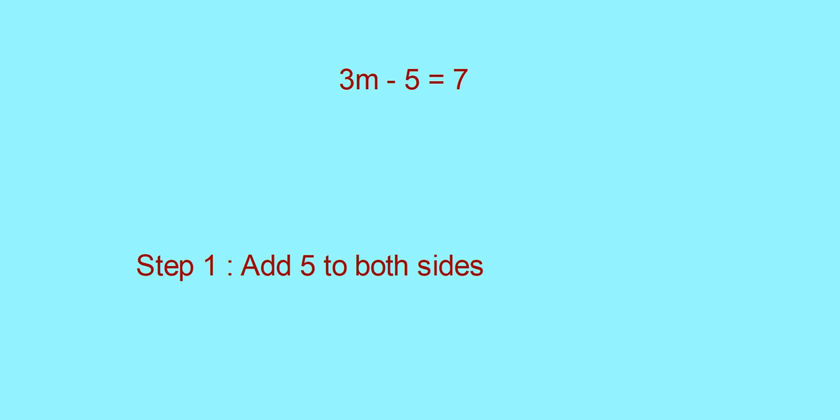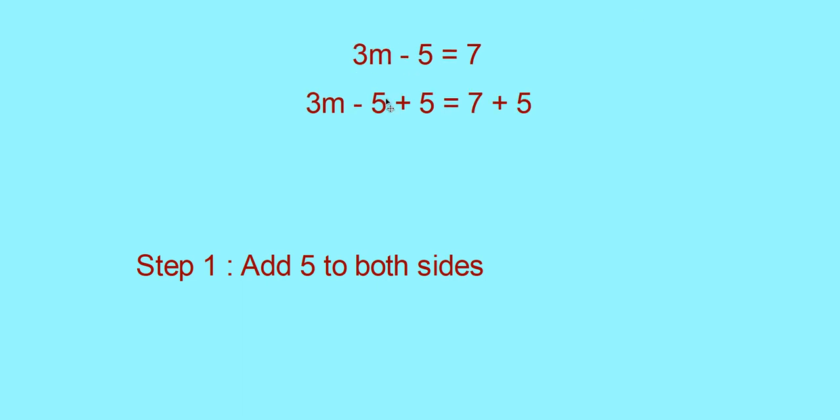Consider another equation: 3m minus 5 is equal to 7. Now, to separate m, what are the steps you have to follow? First, you have to remove minus 5. Step 1 is: add 5 to both sides. That is, 3m minus 5 plus 5 is equal to 7 plus 5. Minus 5 plus 5 will be 0. So you can write: 3m is equal to 7 plus 5, which is 12.